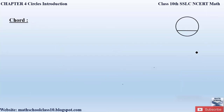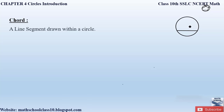Now let us see what a chord is. Whenever we have a circle and there is a line segment which is within the circle — inside the circle — such a line is called a chord. A chord can be drawn in any direction. It should not cross the circumference of the circle. So a line segment drawn within the circle is called a chord.